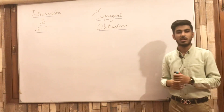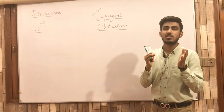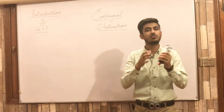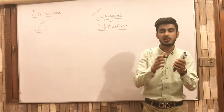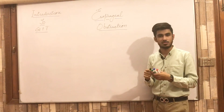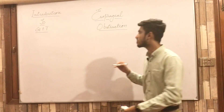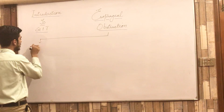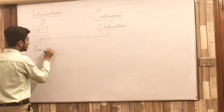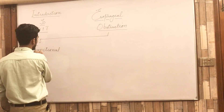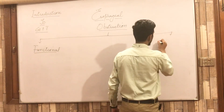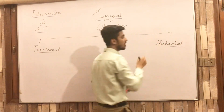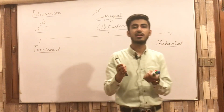The first topic is esophageal obstruction. As its name indicates, esophageal obstruction is the narrowing or decrease of the lumen or diameter of the esophagus. Based on its cause, esophageal obstruction is divided into two types: number one, functional esophageal obstruction, and number two, mechanical esophageal obstruction.